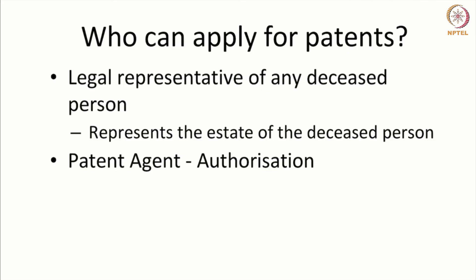It is not that an inventor cannot directly deal with the patent office — as an applicant you can directly deal with the patent office — but the preferred route is through a patent agent. To engage a patent agent, you file an authorization using a particular form. Just as you engage an advocate by filing a Vakalath before a court of law, here you give a power of attorney or use Form 26 to engage a patent agent. The patent agent is the point of contact between the inventor or applicant and the patent office.